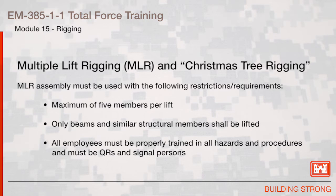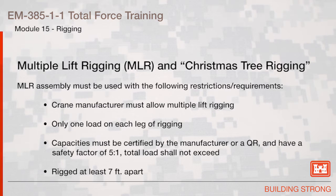Multiple lift rigging assembly must be used with the following restrictions and requirements: a maximum of five members per lift; only beams and similar structural members shall be lifted; all employees must be properly trained in all hazards and procedures and must be qualified riggers and signal persons; the crane manufacturer must allow multiple lift rigging; only one load on each leg of the rigging; capacities must be certified by the manufacturer or a qualified rigger and have a safety factor of 5 to 1; the total load shall not be exceeded; and members must be rigged at least 7 feet apart.